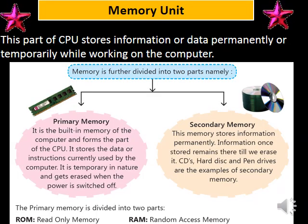Memory unit. This part of the CPU stores information or data permanently or temporarily while working on the computer. Memory is further divided into two parts: primary memory and secondary memory. What is primary memory? It is the built-in memory of the computer and forms a part of the CPU. It stores the data or instructions currently used by the computer. It is temporary in nature and gets erased when the power is switched off.